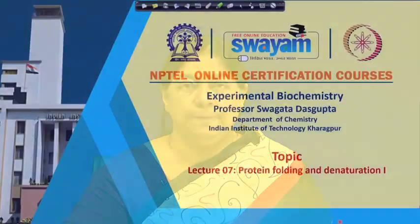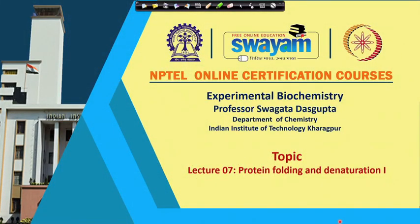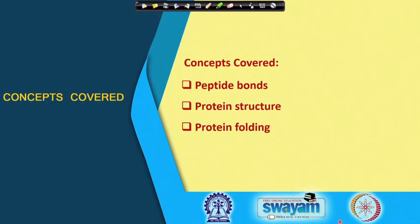Welcome to the next lecture on protein folding and denaturation. Before we start understanding protein folding and what we mean by denaturation, our first understanding will be about amino acids that construct proteins and the forces involved to fold a protein. The concepts covered involve peptide bonds, protein structure, and protein folding, extending to the next lecture on folding and denaturation in terms of the interactions involved in protein structure.